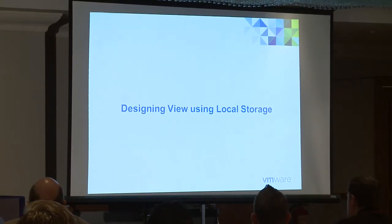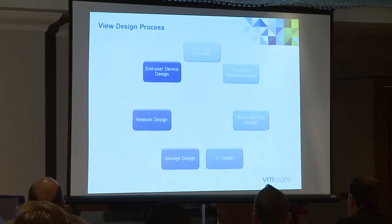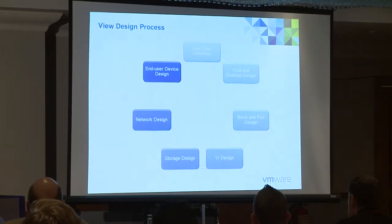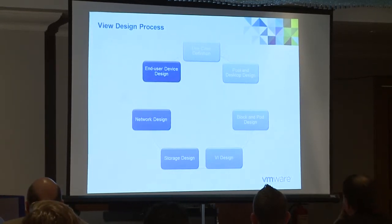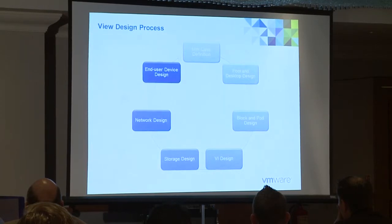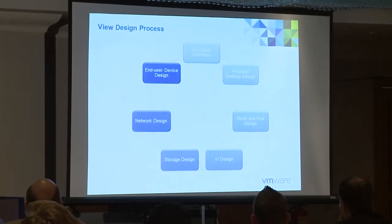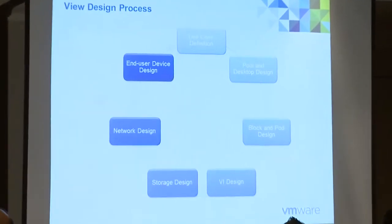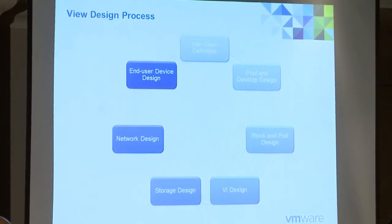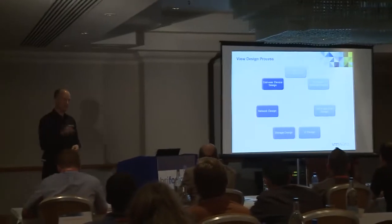So going back to the stateless desktop using local storage — how do we design this? We see View design as a cyclical procedure. We start with use case definition, go around through pool design, all the way to end user device selection. Then we look at all those decisions and see how something like storage design — using local disk — has affected every other decision. Local storage has an effect on pool design, block design, virtual infrastructure. You need to go back around and make sure you don't have to change anything else.